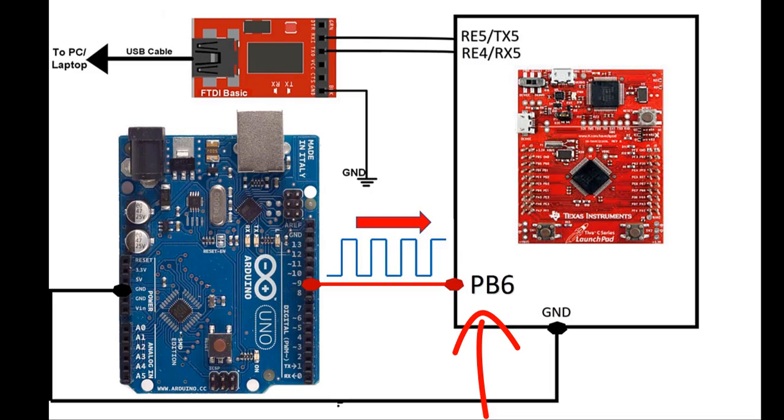PB6 is a capture pin for timer 0A. To provide variable PWM pulse duration signal to Tiva launchpad, we use an Arduino Uno. Now make connection with TM4C123 Tiva launchpad and Arduino according to this schematic diagram.